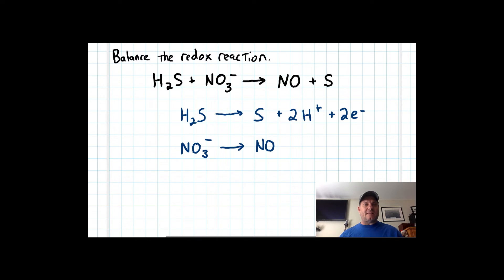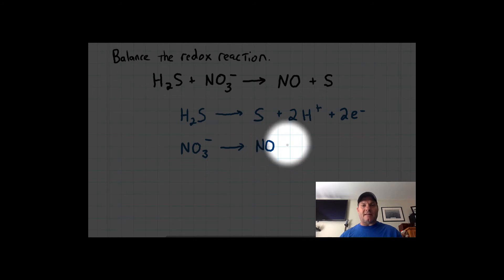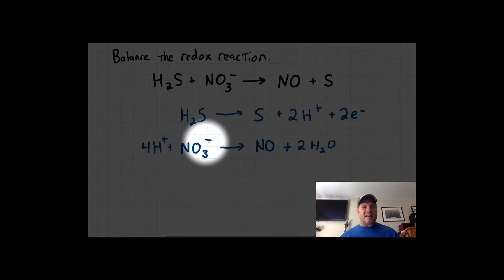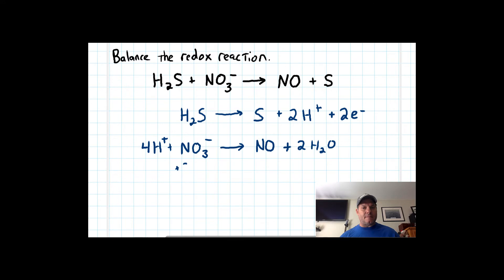Now for the second half-reaction: balance elements other than oxygen or hydrogen — one nitrogen on each side, so we're good. Balance oxygens by adding waters: three oxygens on the left, one on the right, so add two waters to the right for a total of three on each side. Balance hydrogens by adding H⁺: add four H⁺ to the left. Now total the charge: four pluses and a minus one gives plus three on the left; zero on the right. So we add three electrons to the more positive left side.